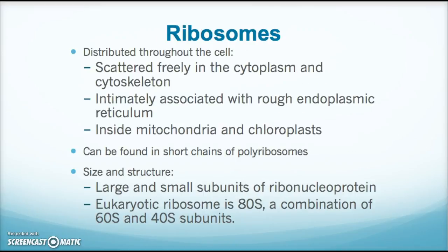Ribosomes are found in all cells, distributed throughout the cytoplasm and cytoskeleton, associated with the rough endoplasmic reticulum, and found within both mitochondria and chloroplasts. They can be found in short chains called polyribosomes. In a eukaryotic cell, ribosomes are large — 80S — composed of 60S and 40S subunits, compared to the 70S of prokaryotes. Protein synthesis is the function of the ribosome.